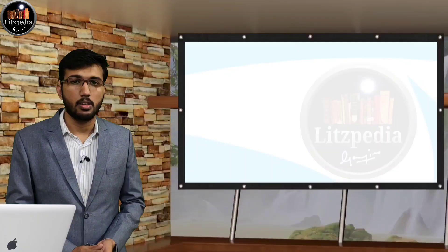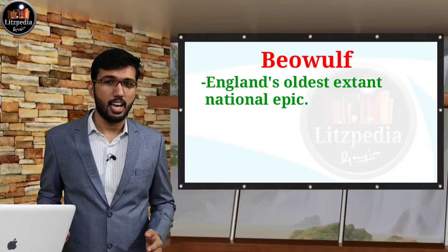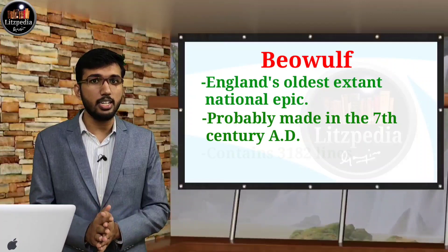We are starting with Beowulf. Considering Beowulf, it is actually England's oldest extant national epic, and it was made probably in the 7th century AD. This is what we need to understand about the basic details of Beowulf. It is also a Scandinavian story of the Geatish hero Beowulf, and it also contains 3182 lines.